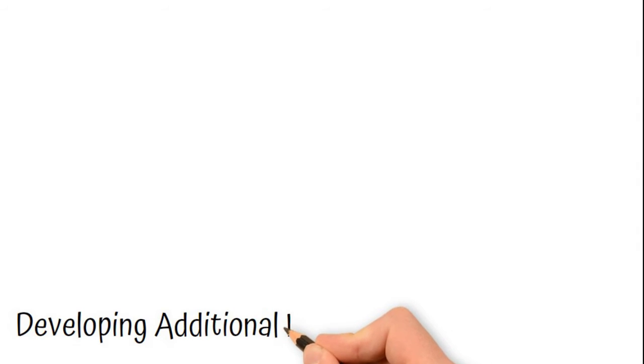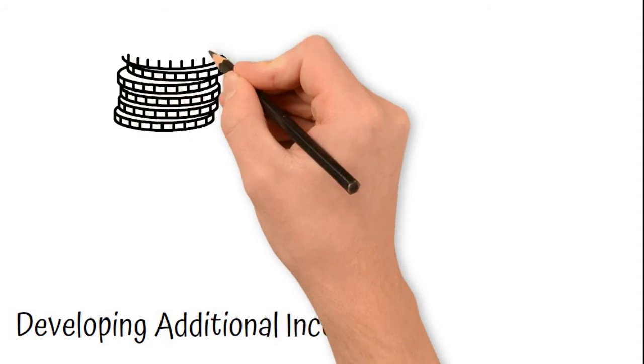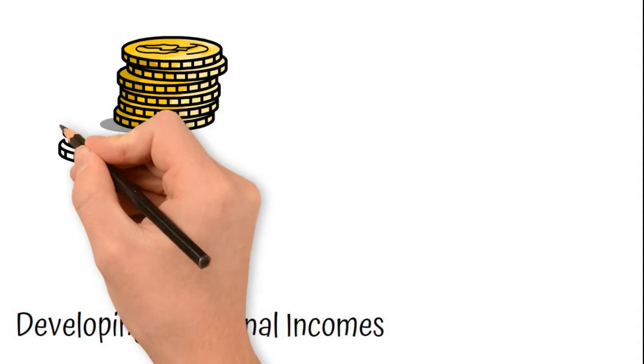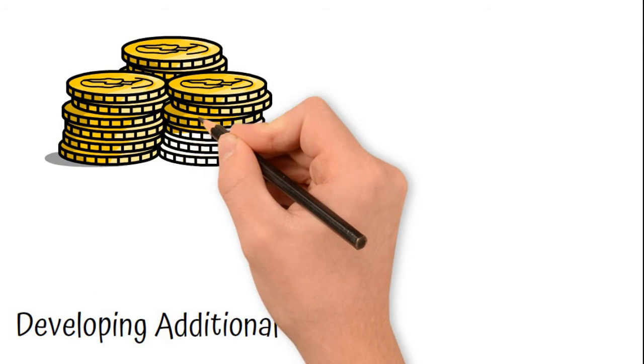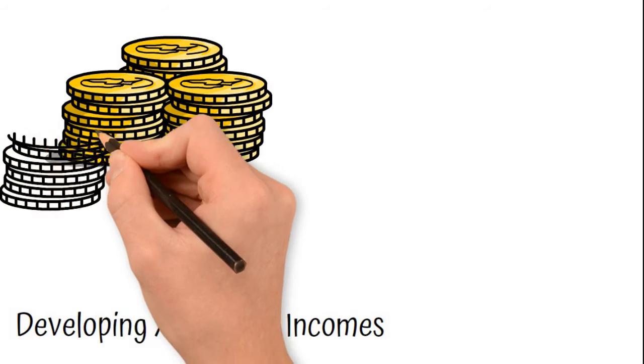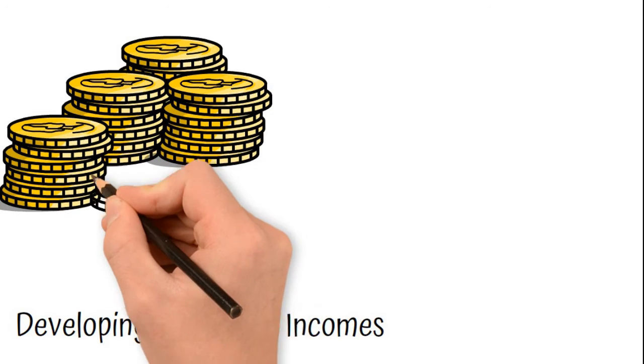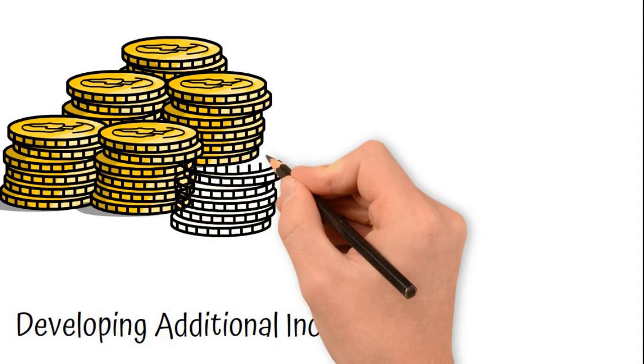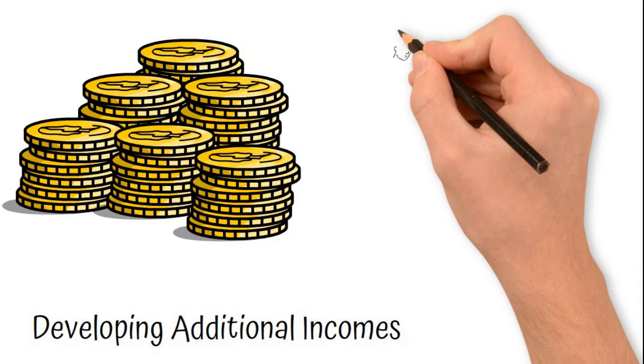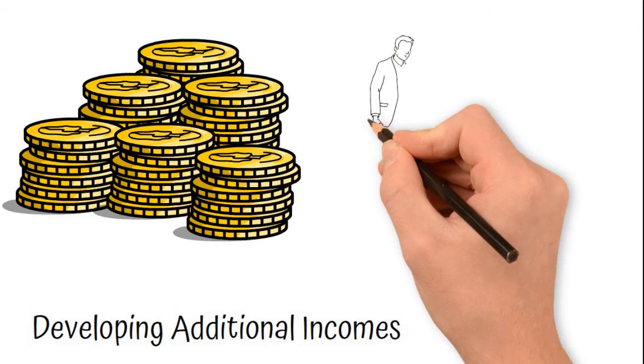So habit number four, developing additional incomes. Now this is a major one and one that focuses more on the wealth side of this equation. But most successful people, if you listen to them closely, you'll notice they don't just have one job. They don't just have one thing that builds up their income. No, they've got multiple sources of income.